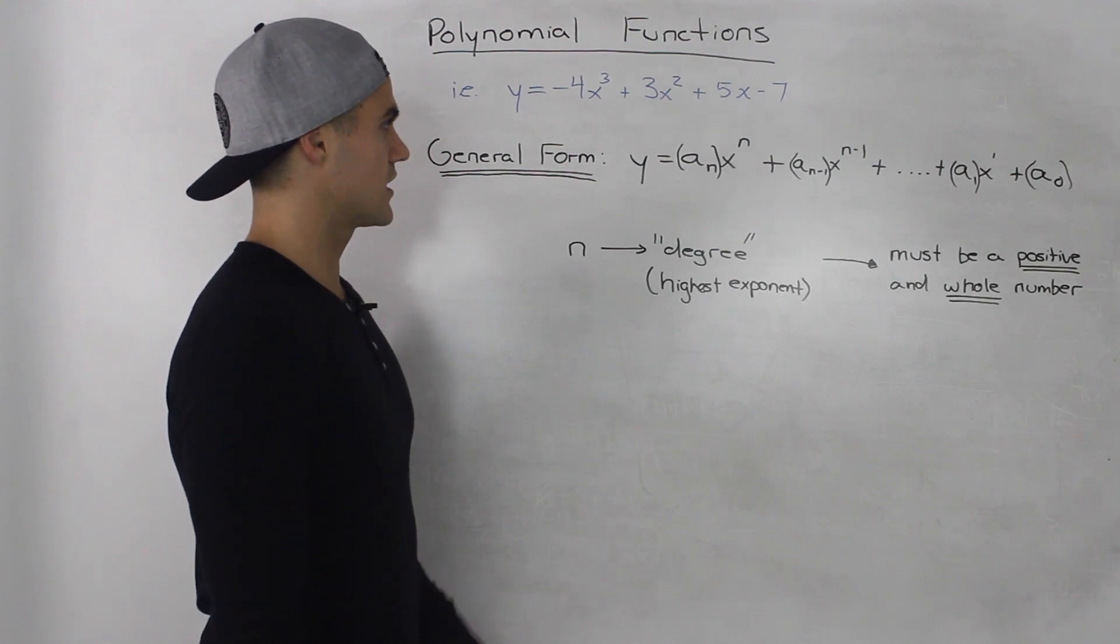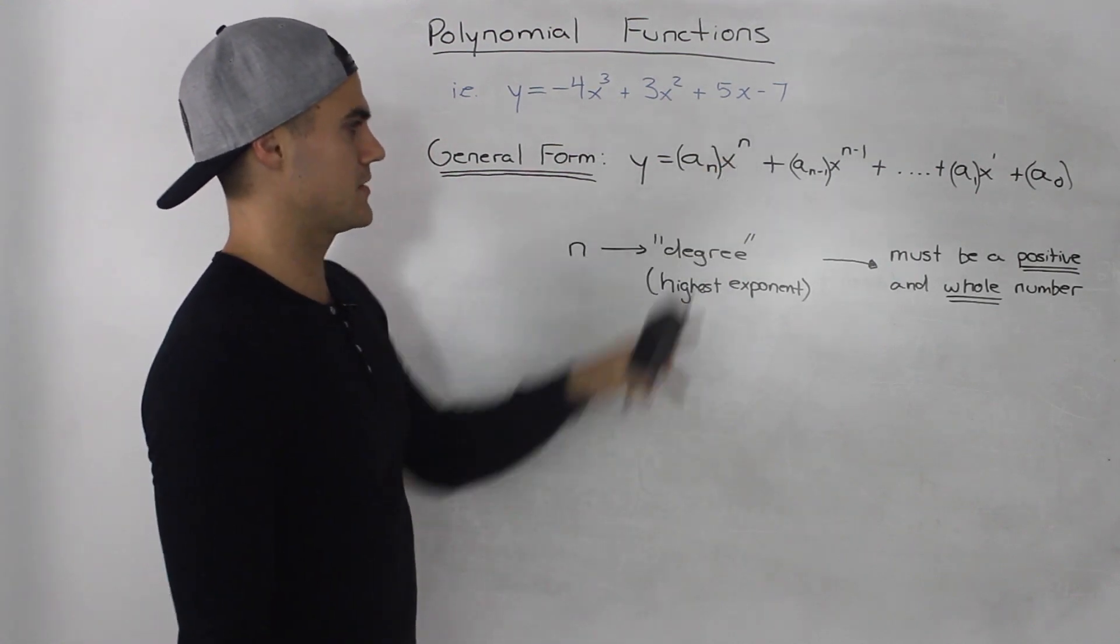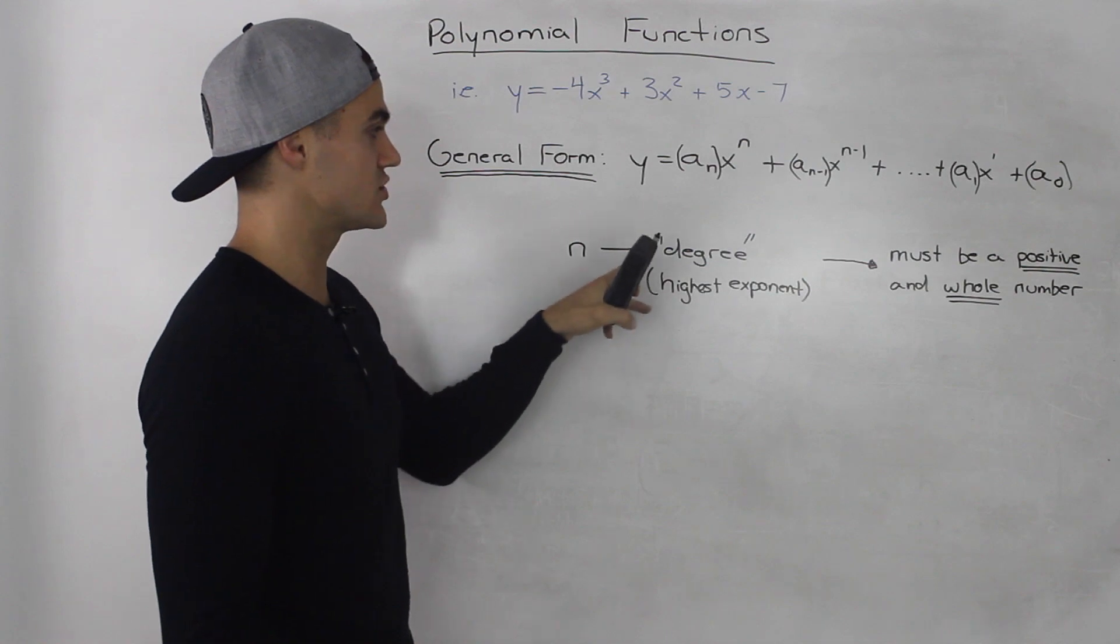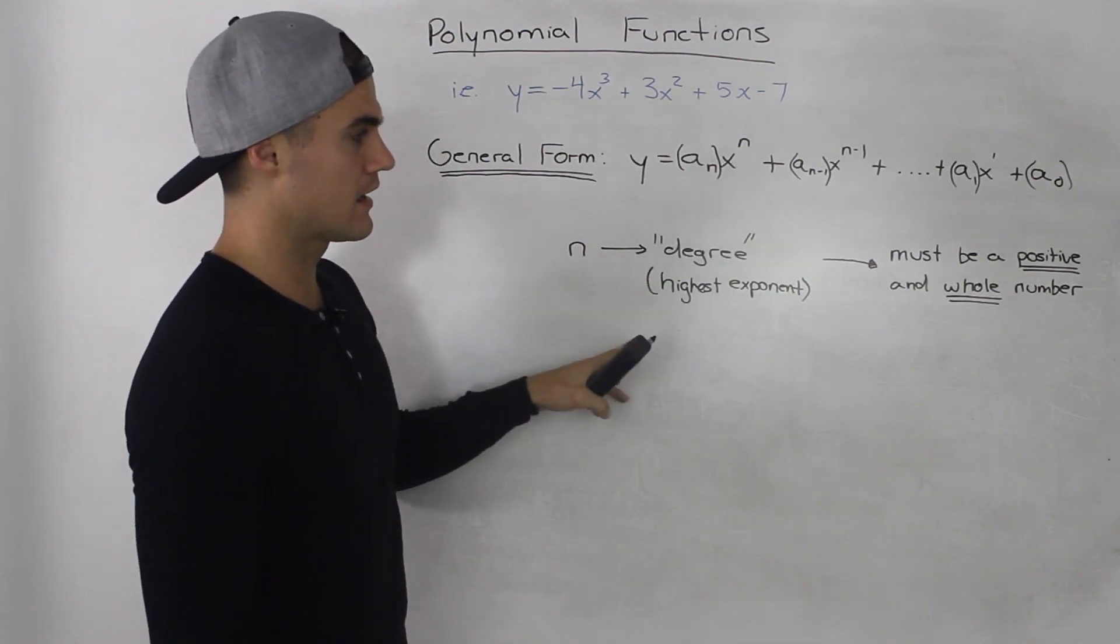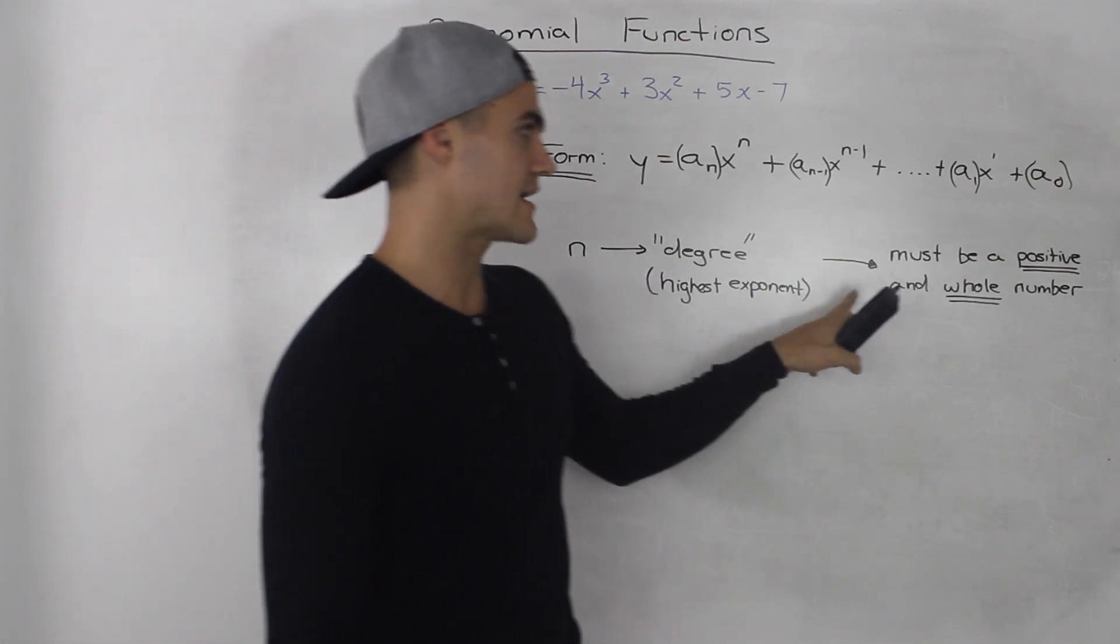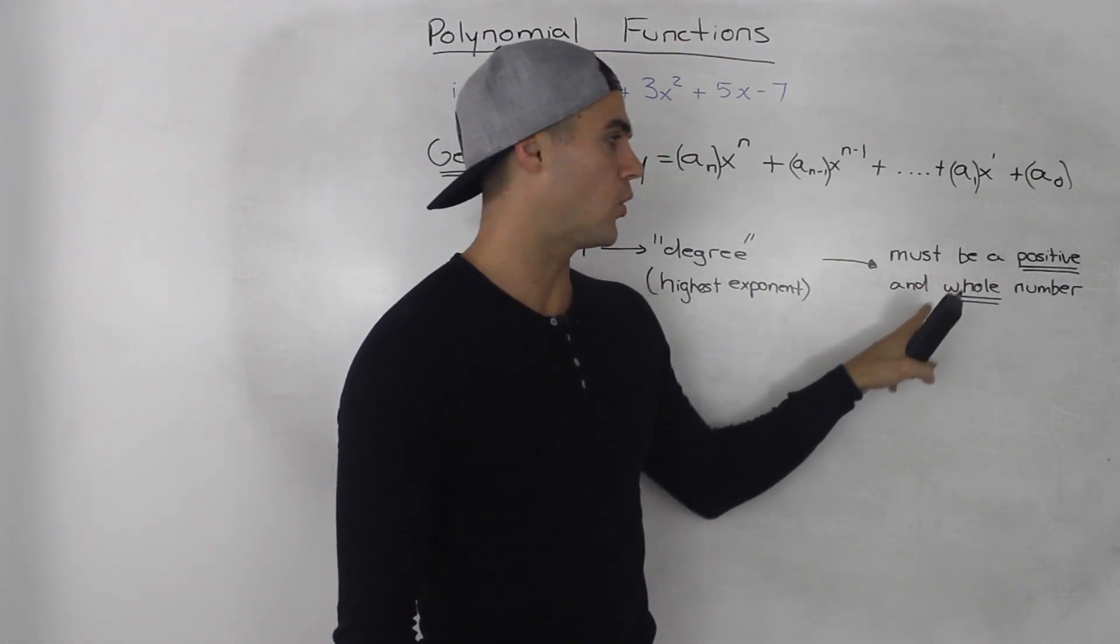So the first thing is, let's talk about what this n means. So n just means it's the degree of the function and it's always the highest exponent. And the restrictions on n is that it must be a positive and whole number.